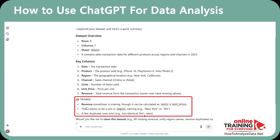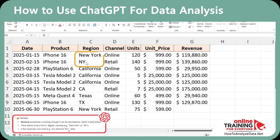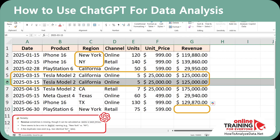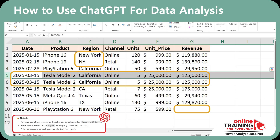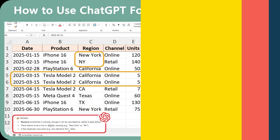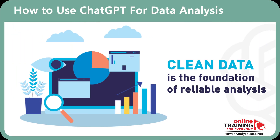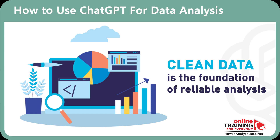Take a close look at these inconsistencies inside the Excel file: NY vs. New York, missing revenue for a PlayStation 6 sale, and duplicate sales entries — for example, this Tesla Model 2 sale on March 15th. As you might be well aware, cleaning up the data is the foundation for reliable data analysis.